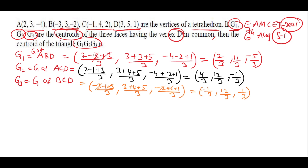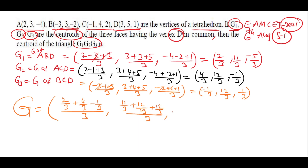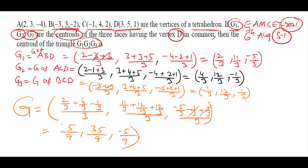Now find the centroid G of triangle G1G2G3. x-coordinate: (2/3 + 4/3 - 1/3)/3 = (5/3)/3 = 5/9. y-coordinate: (11/3 + 12/3 + 12/3)/3 = (35/3)/3 = 35/9. z-coordinate: (-5/3 - 1/3 + 1/3)/3 = (-5/3)/3 = -5/9. Therefore, the centroid of triangle G1G2G3 is (5/9, 35/9, -5/9).